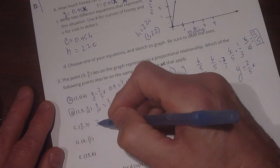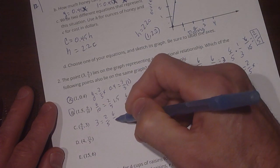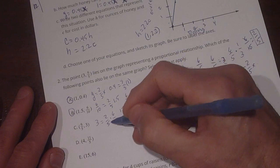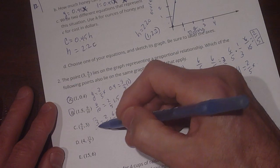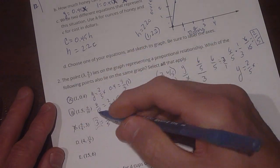And then we say 3 equals 2 fifths times our x, which is 6 fifths. Okay, so 2 times 6 is 12, 5 times 5 is 25. And 12 twenty-fifths definitely does not equal 3. 12 twenty-fifths isn't equal to 1 whole even, so C does not work.